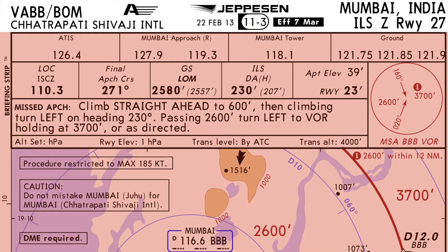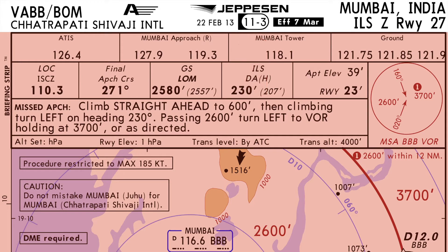In this case we are discussing the Zulu Approach. The center part of the header includes the chart index number, which for ILS approaches always starts with the number 11. The dash 3 indicates this is the third ILS approach at this airfield. There are other runways with ILS approaches as well; those charts will be indexed 11-1 and 11-2.